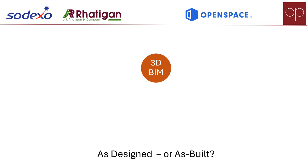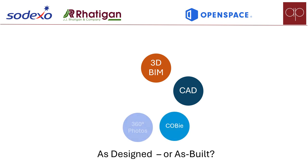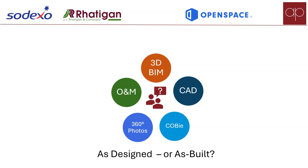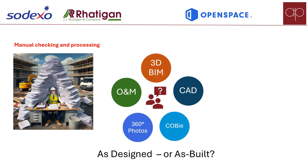If you're lucky, you get a 3D BIM model, lots of CAD drawings and COBie, and then there's photographs and lots and lots of PDFs. Even the people who deliver all of this struggle to tie it together, so the FMs don't really stand a chance.